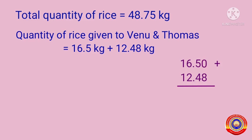Now add these numbers from right towards the left. First add the numbers in the decimal places: 0 plus 8 is equal to 8, then 5 plus 4 is equal to 9. Now put a decimal point here. Add the numbers in the whole number part: 6 plus 2 is equal to 8, and 1 plus 1 is equal to 2. Therefore, 16.5 kilograms plus 12.48 kilograms is equal to 28.98 kilograms.